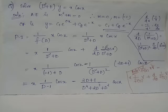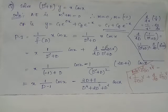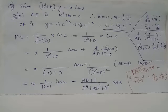In order to evaluate the particular integral (PI), we will make use of the rule: when (1/f(D)) acts on x multiplied by a function v of the independent variable x, then 1/f(D) acting on x·v equals x·(1/f(D))·v plus the derivative of the operator (1/f(D)) with respect to D, acting on v.